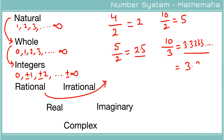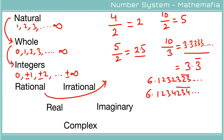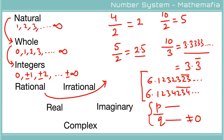The number 3.333... can also be written as 3.3 with a bar on top, meaning the decimal portion is repeating. We can also have numbers like 6.12323232... where 23 is repeating, or other repeating patterns. Any number with either a finite decimal part, or an infinite but repeating decimal part, can always be written in the form p/q, where p and q are integers and q is not equal to zero. All such numbers are known as rational numbers.